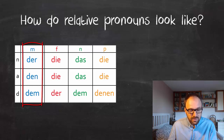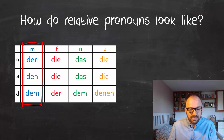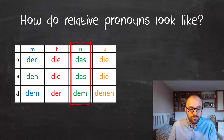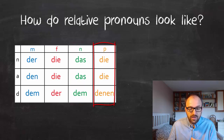In blue, the masculine relative pronouns: N stands for nominative — 'der'; A stands for accusative — 'den'; and D stands for dative — 'dem'. In red, the feminine relative pronouns: 'die', 'die', 'der'. In green, the neuter relative pronouns: 'das', 'das', 'dem'. And the plural relative pronouns are 'die', 'die', and 'denen'.